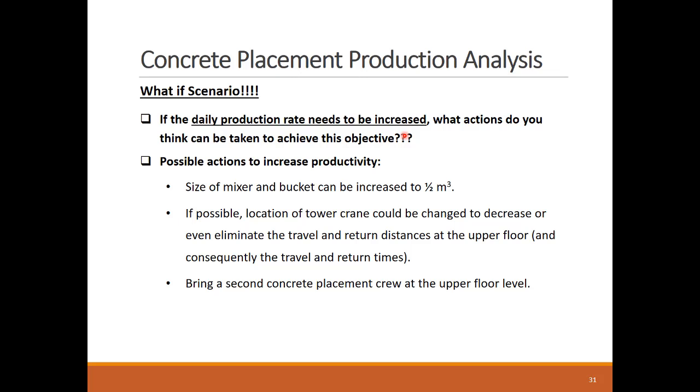What if we are not satisfied with this production rate? You can increase the cycle output or decrease the cycle time. The cycle output can be increased by using a larger mixer or bucket. The cycle time can be reduced by picking a better spot for the tower crane with less travel times, or we can add a second placement crew as it is the one that controls the cycle time and is utilized 100% of the time.